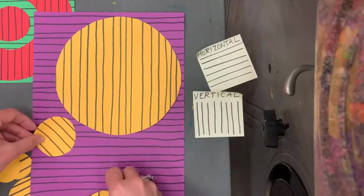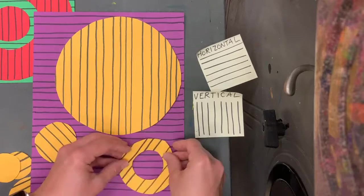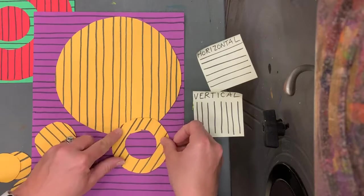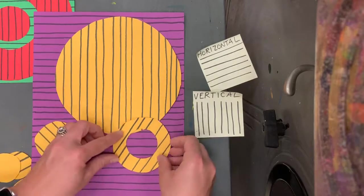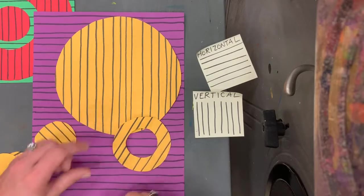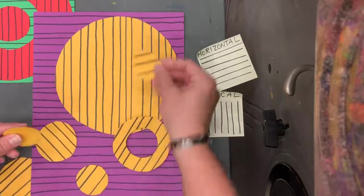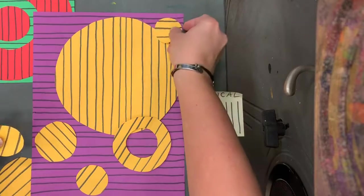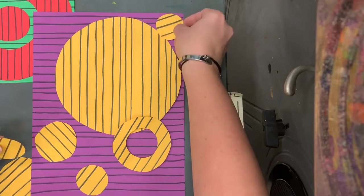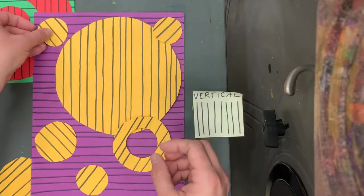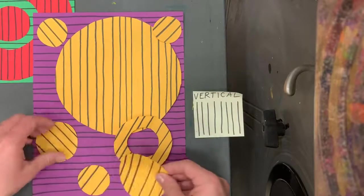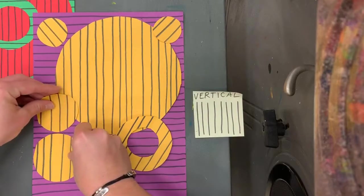This is going to be vertical. Then I've got all these. Now before I lay these down, I'm going to look and see how I want it to go. They can overlap. See how these lines are now diagonal. So you're going to decide on your composition, how you want it to go and glue down your circles.